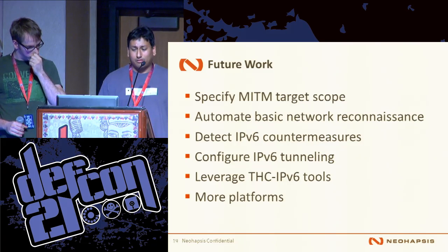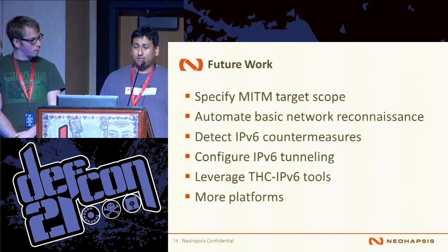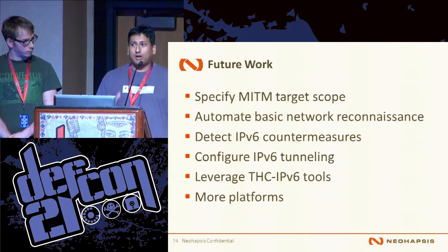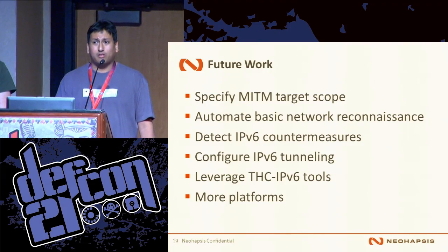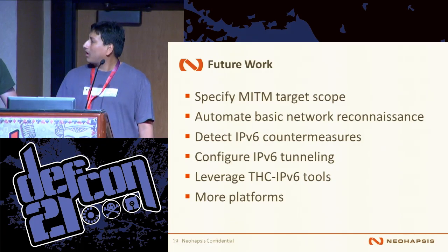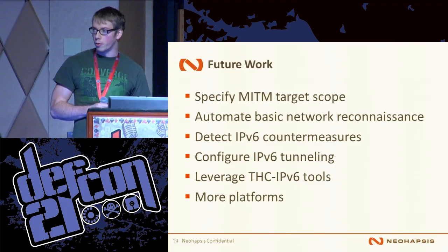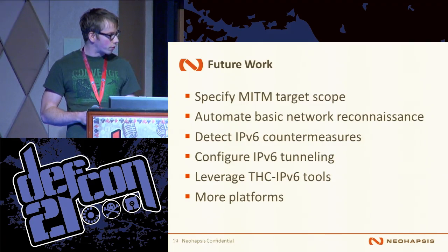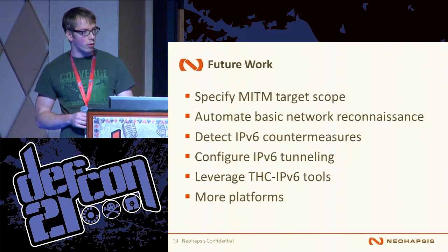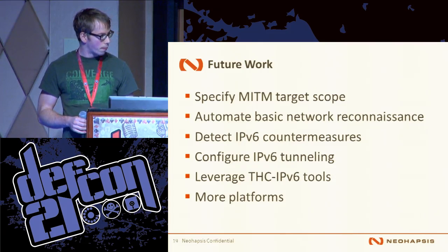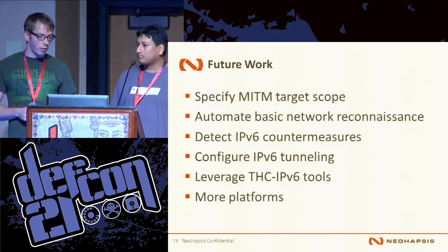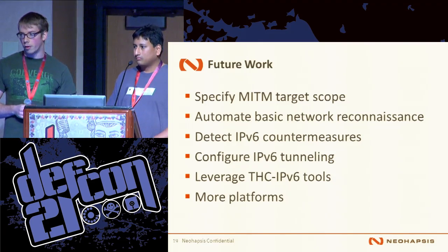Another thing we'd like to include is leveraging the Hacker's Choice IPv6 tools. There's a tool that will listen for router advertisement responses and display on stdout the list of IPv6 addresses being handed out along with their MAC addresses, so you can see exactly which clients are being added to the network — giving you better metrics on what's going on with the attack. We'd also like to expand this to more platforms. We looked at mobile and Android just isn't all the way there yet. On iOS the DNS servers are queried in linear order, so the IPv4 DNS servers always go first, which caused some issues.